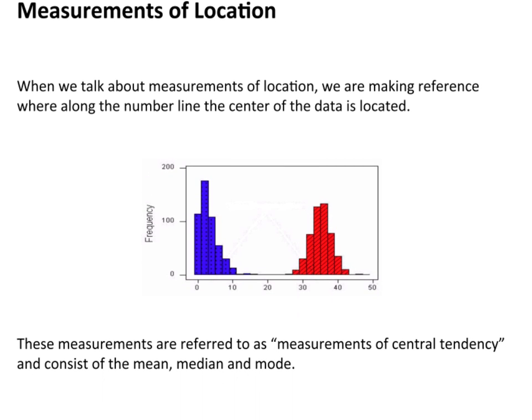Let's start off talking about measurements of location. When we talk about measurements of location, we're making reference to where along the number line the center of the data is located. Here's a number line that starts at 0, this is 40 and up here is 50.